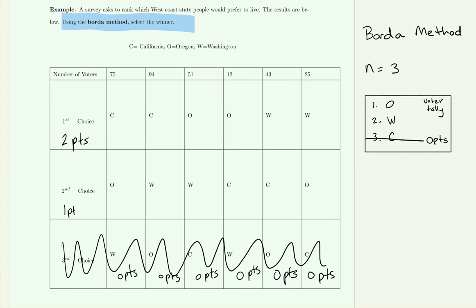Now let's work through the table. This first box shows that 75 people in this column ranked California as their first choice. To calculate points, we take 75 and multiply by two points, since first place is worth two points. That contributes 150 points for California.